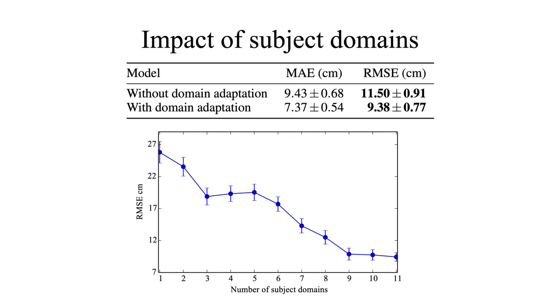We also investigated how the subject domains impact the model performance. We see that with more subject domains being involved, the model has better, could reach better representation. We see that with 11 domains all involved, we could reach accuracy within 10 centimeters. Though there are some variations between, for example, three subjects to four subjects, clearly the figure shows that with more subject domains being involved, we will clearly obtain better results. So if we collect more datasets, we could reach better results.